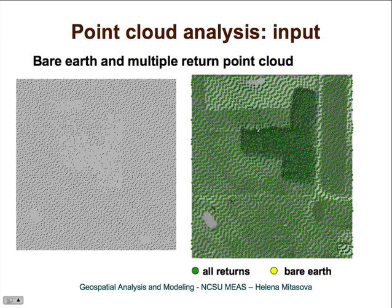The green points are all returns and the yellow points are bare earth points. In some locations we didn't have any return that reached the ground, so bare ground data in forested areas have lower density than in open areas. Where there is a building, you can see there are all-return points but no bare earth data — in the NC flood mapping bare earth dataset, you wouldn't have any points at all in areas where buildings are present.